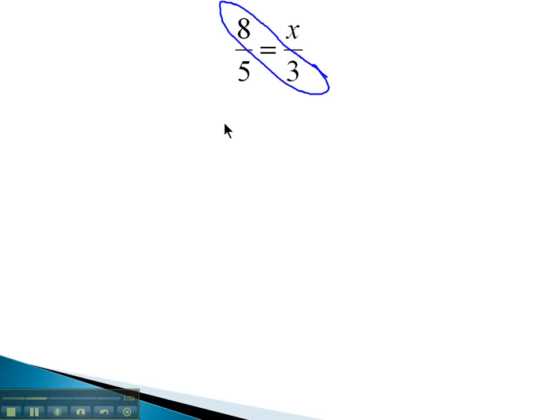8 times 3 is the first diagonal, which is 24. The second diagonal, 5 times x, gives us simply 5x, and we know these must be equal. In order to solve for x then, we simply need to get rid of the 5 by dividing both sides by 5, giving us x is equal to 24 divided by 5, which we find is the decimal 4.8.